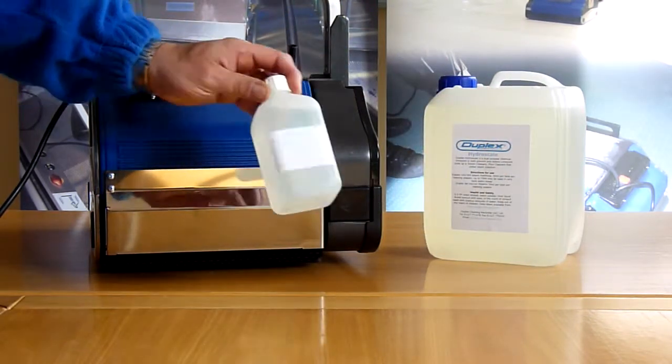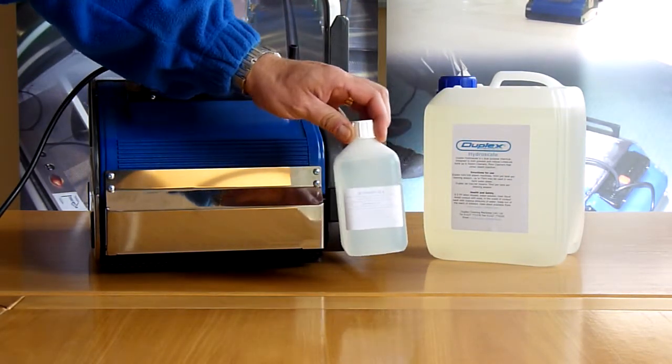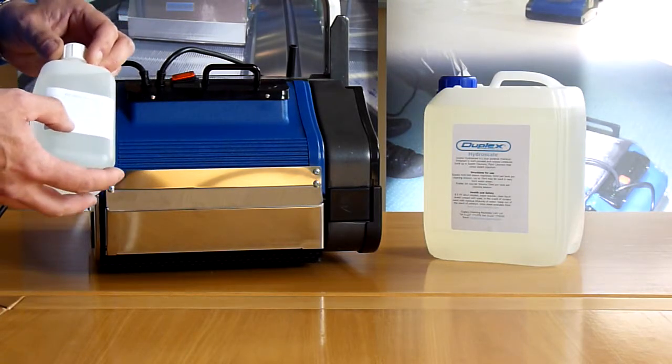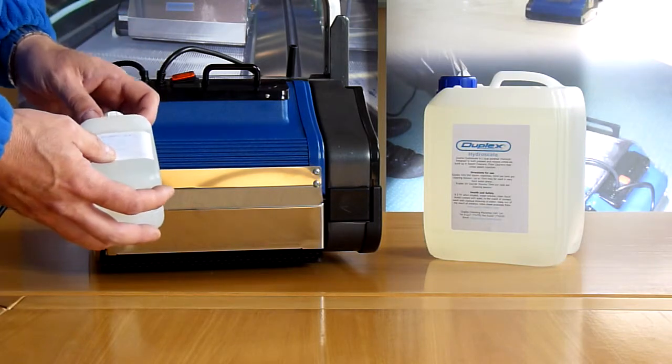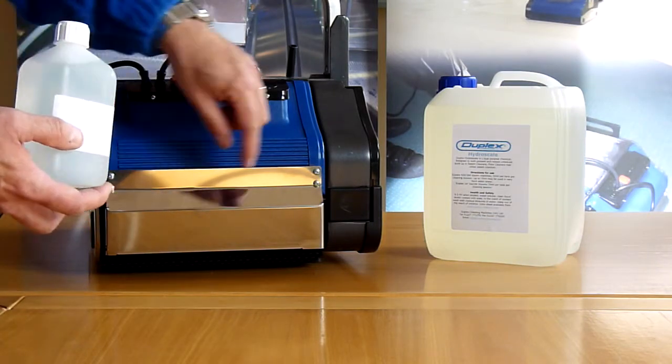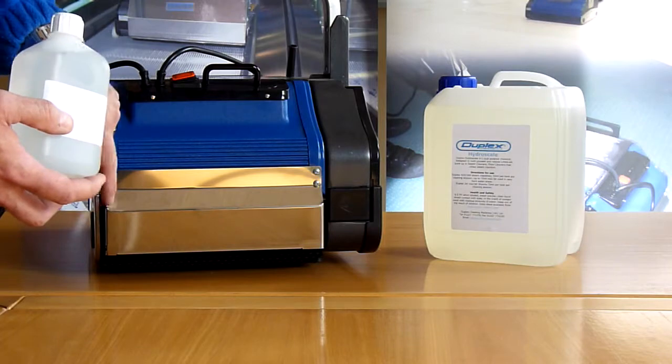When you purchase your machine, you would have been given a small sample bottle of HydroScale. 50ml of this chemical needs to be put into the water tank and then filled up with water and use the machine normally. This will help to keep any pipes inside the generator clear.